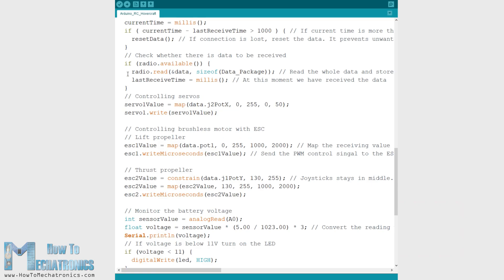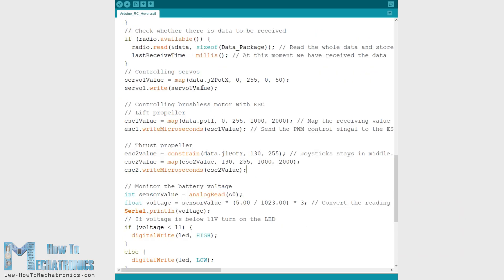In the loop section we read the incoming data from the transmitter and we use those values for controlling the servo and the brushless motors. So the joystick incoming data, which varies from 0 to 255, is converted into a value from 0 to 50 and we use these values to control the position of the servo. With the same method we control the brushless motors using the ESCs. The incoming data, which is from 0 to 255, is converted into values from 1000 to 2000 and using the write microseconds function we send this data to the ESC as a control signal.